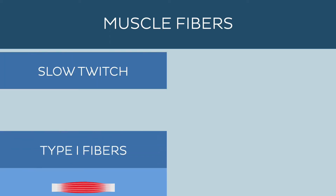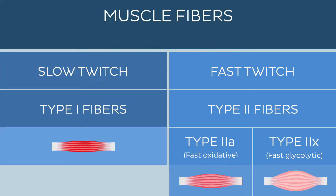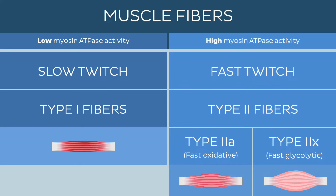Muscle fibres can either be considered slow twitch or fast twitch fibres. This depends on the activity of ATPase within the myocytes. As the name suggests, slow twitch fibres have a low myosin ATPase activity, while fast twitch fibres have a high myosin ATPase activity. ATPase quantity and activity correlates positively with contraction speed.